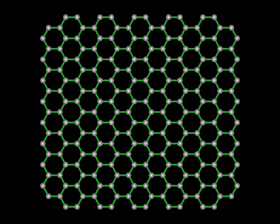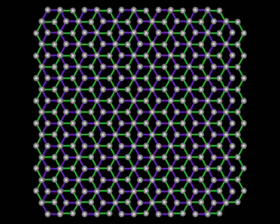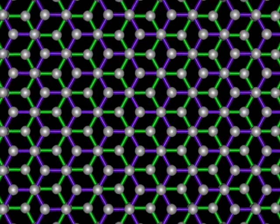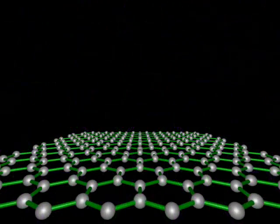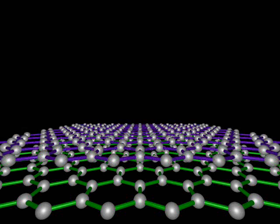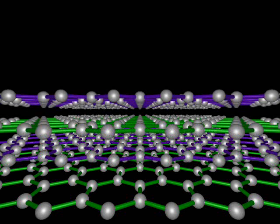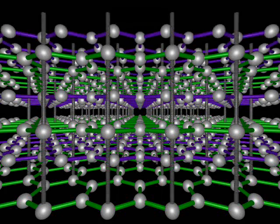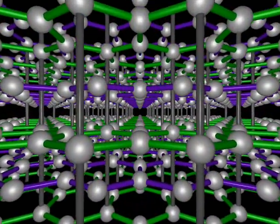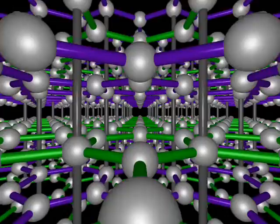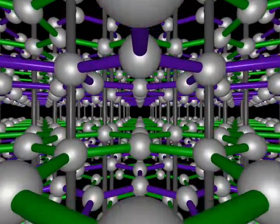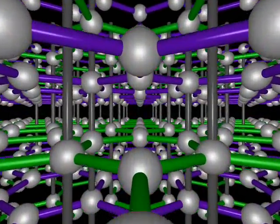The structure of graphite consists of layers of these infinite sheets stacked one on top of another. The layers do not lie immediately on top of one another, but instead are offset as shown here. Alternating layers are equivalent. There is no actual bonding between the layers. Graphite is therefore said to be a two-dimensional network covalent solid, as the chemical bonding only occurs in two dimensions.